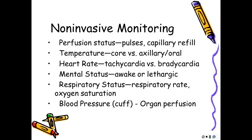The key difference between kids and adults is the order we monitor things. With adults, blood pressure is the first thing that goes — if their blood pressure is good, they're good. But in kids, blood pressure is the last thing to go. Kids can have a normal blood pressure with almost 25% of their circulating blood volume depleted by dehydration or bleeding. So you cannot use blood pressure as your primary monitoring indicator. The number one thing to look at is their perfusion — cap refill, extremities versus peripheral.